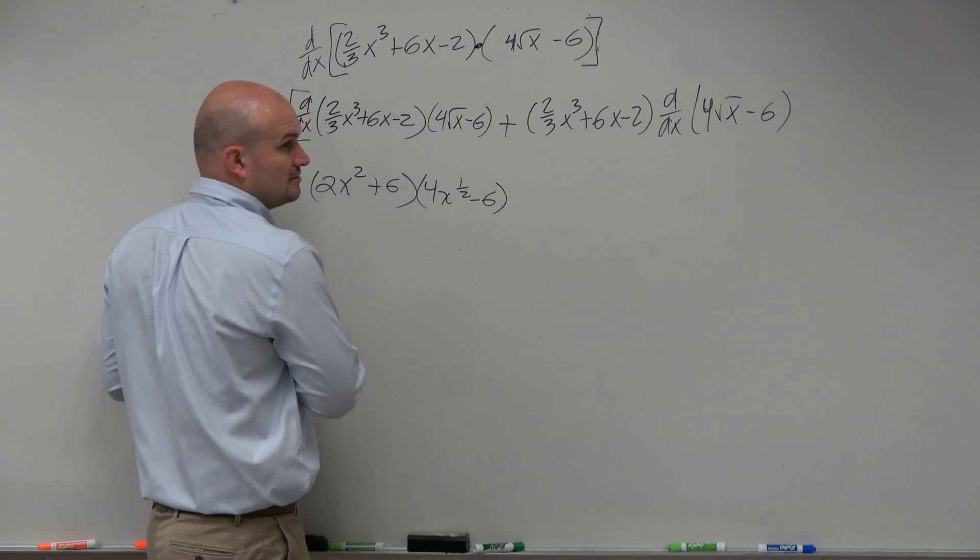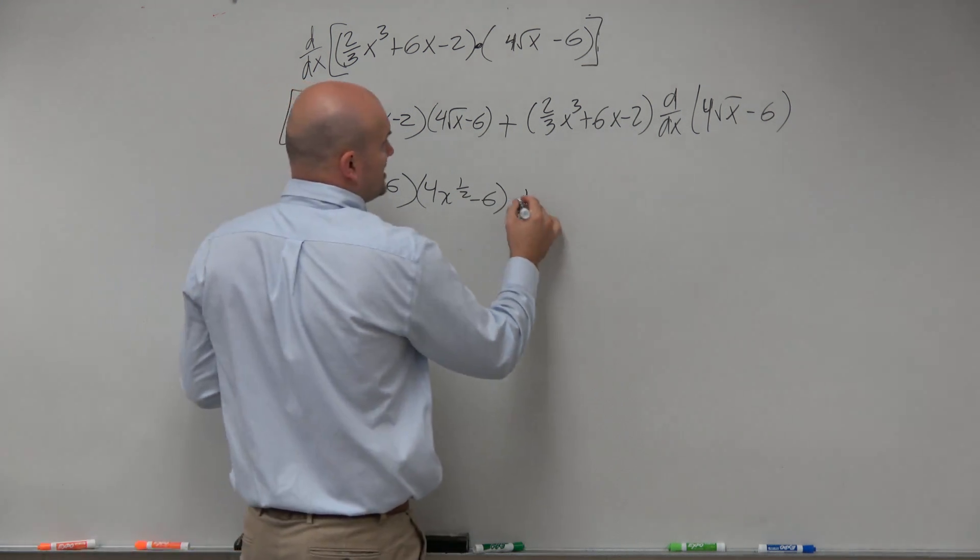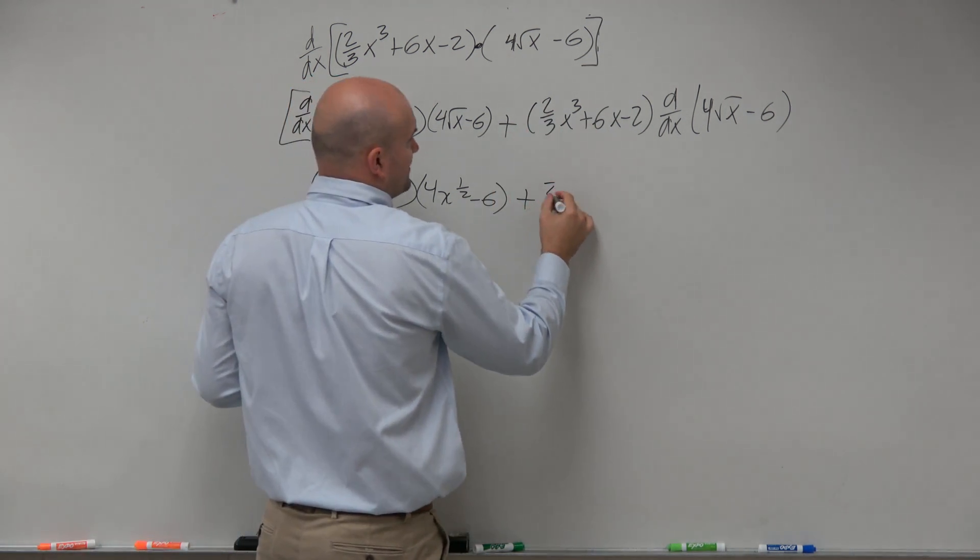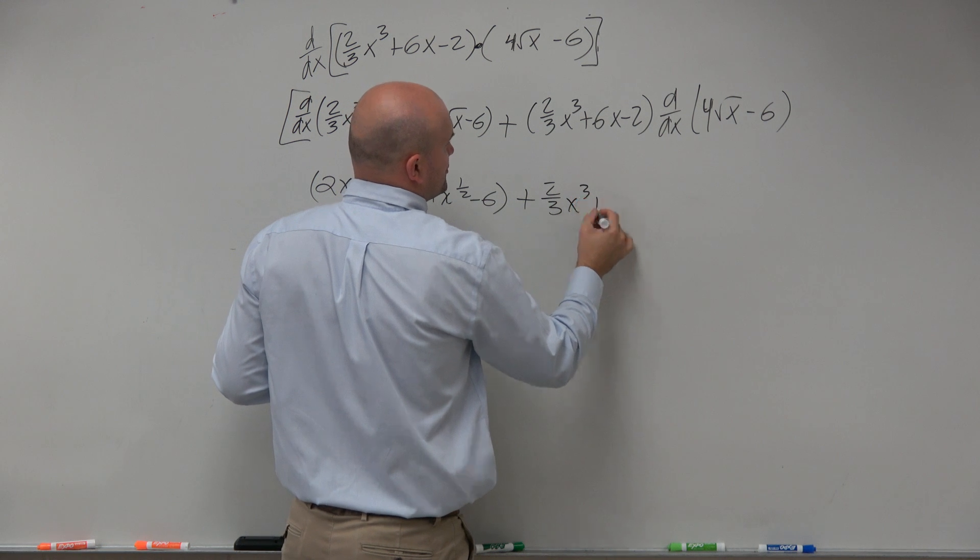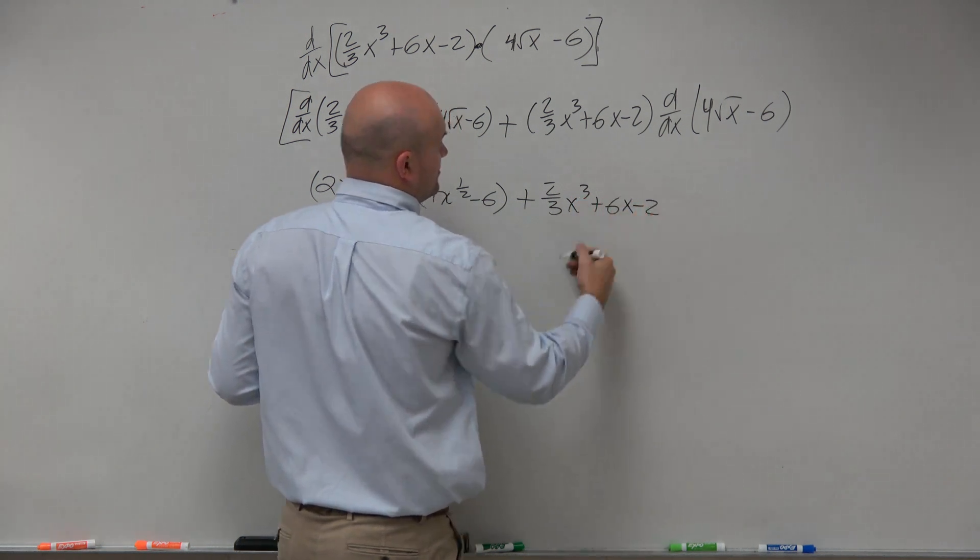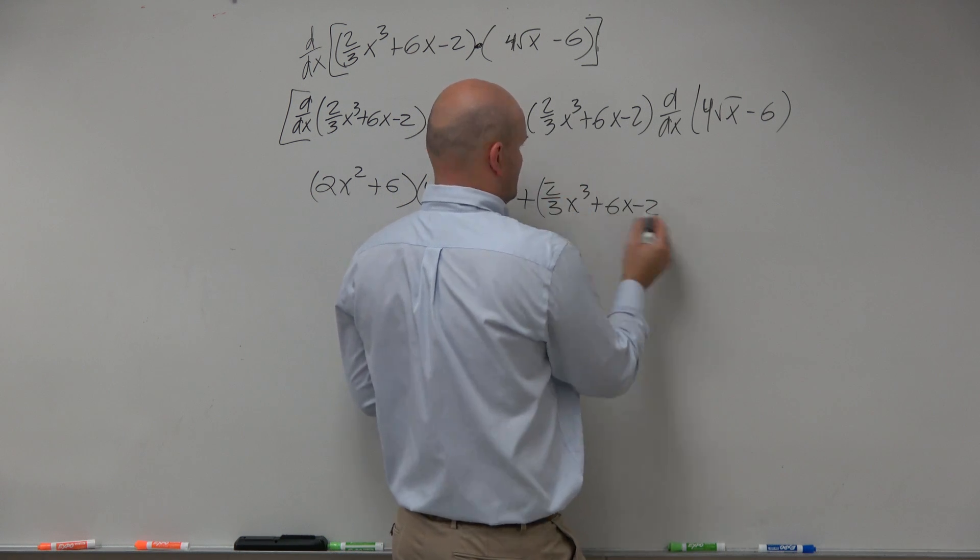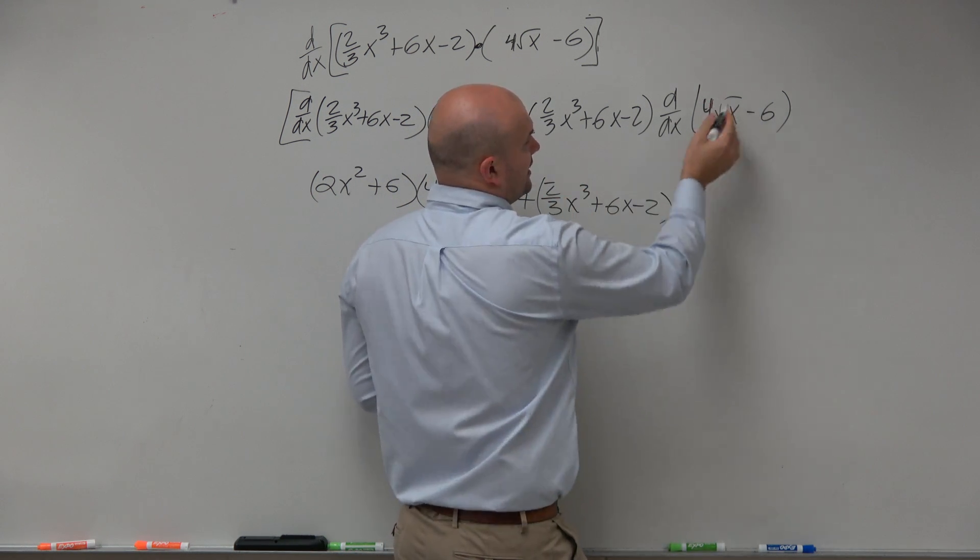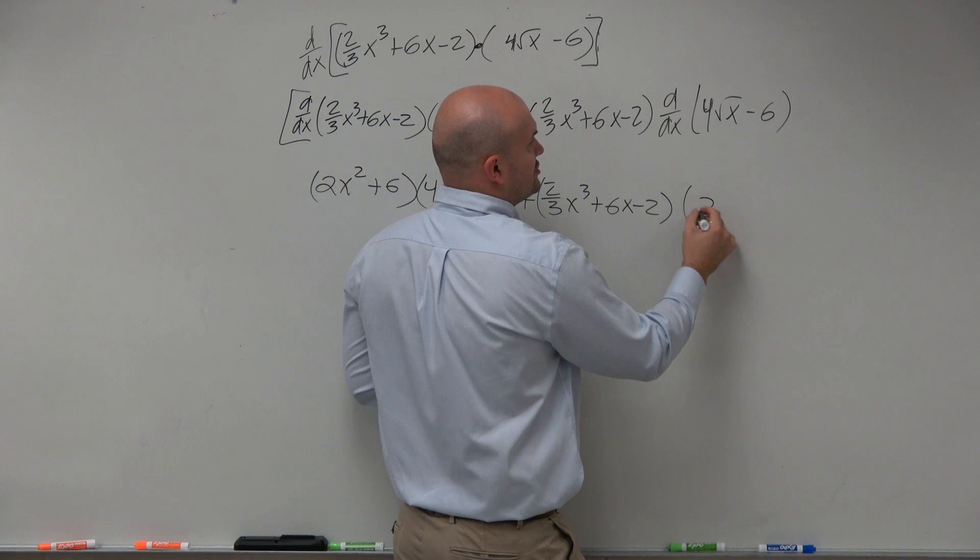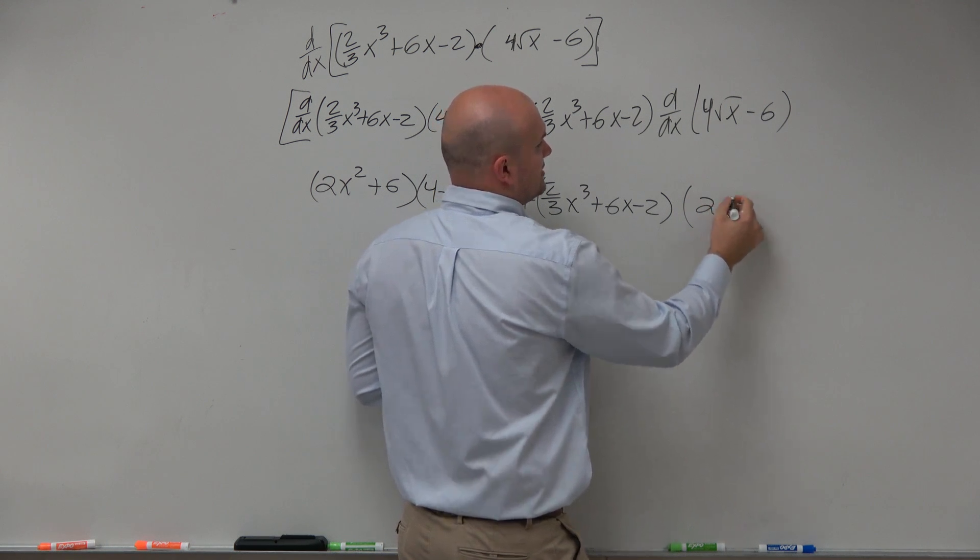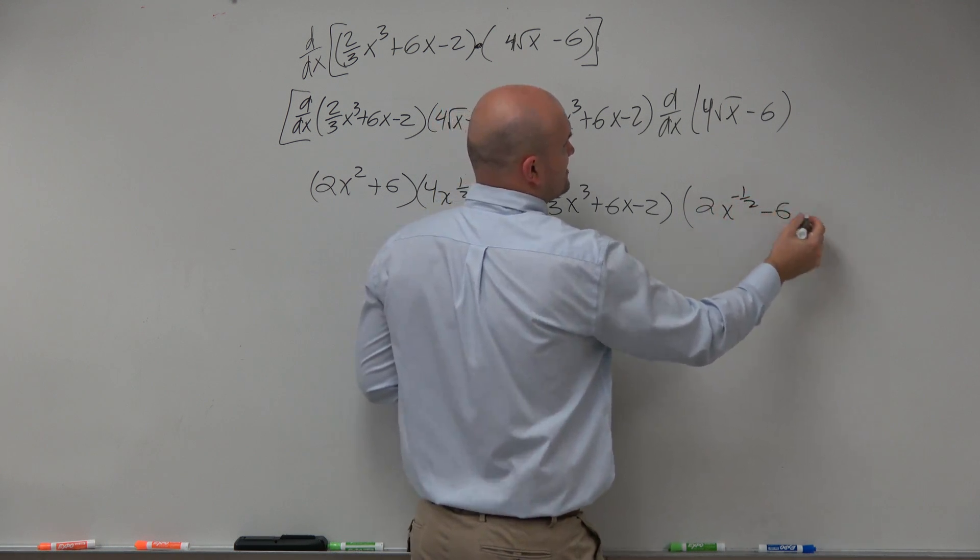Plus here we're left with (2/3)x³ + 6x - 2, and then the derivative over here is going to be 2x^(-1/2) - 6.